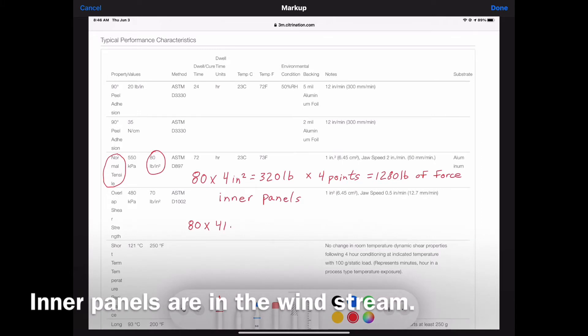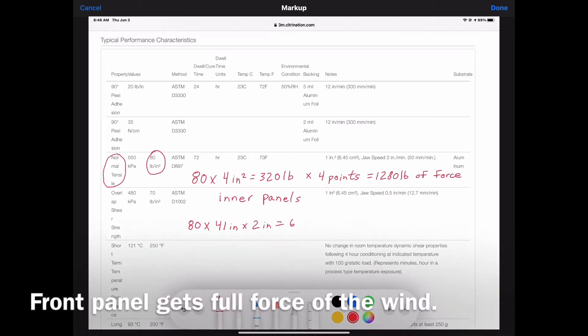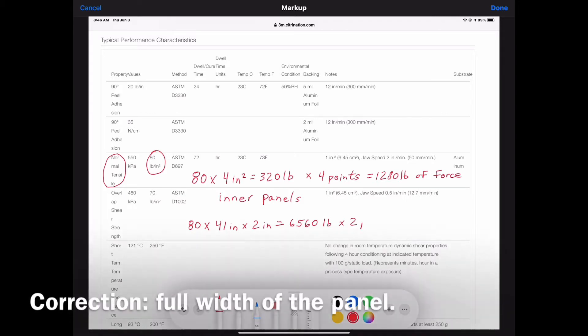Then we go to the outer panels, or actually the front panel here. I knew that there'd be lots of wind coming from the drive and trying to peel up the panels. So I made that 41 inches, full length of the solar panels, two inches wide. So, 6,560 pounds times two points.